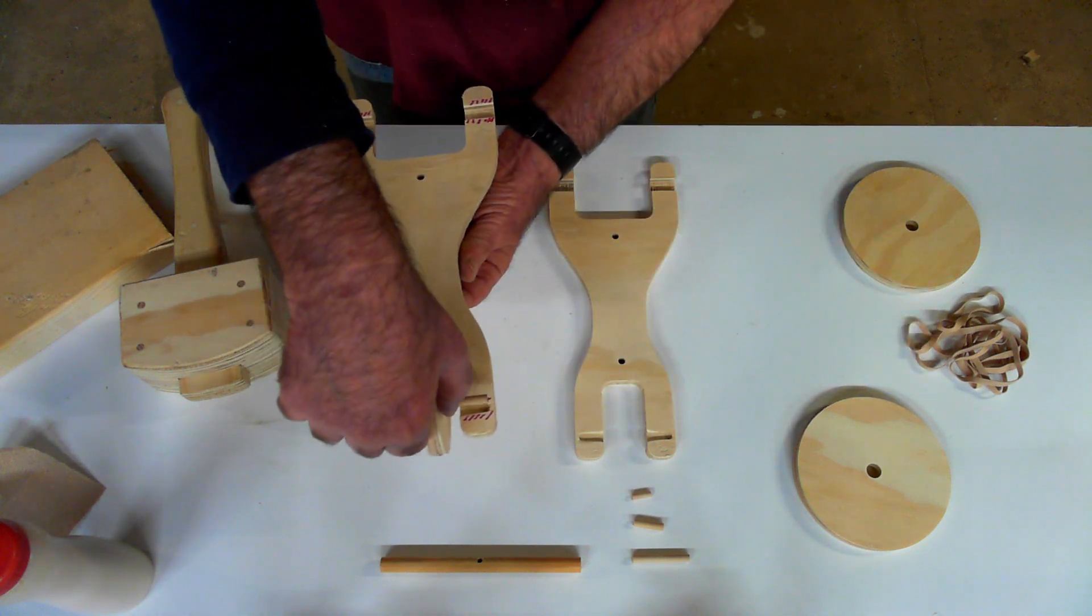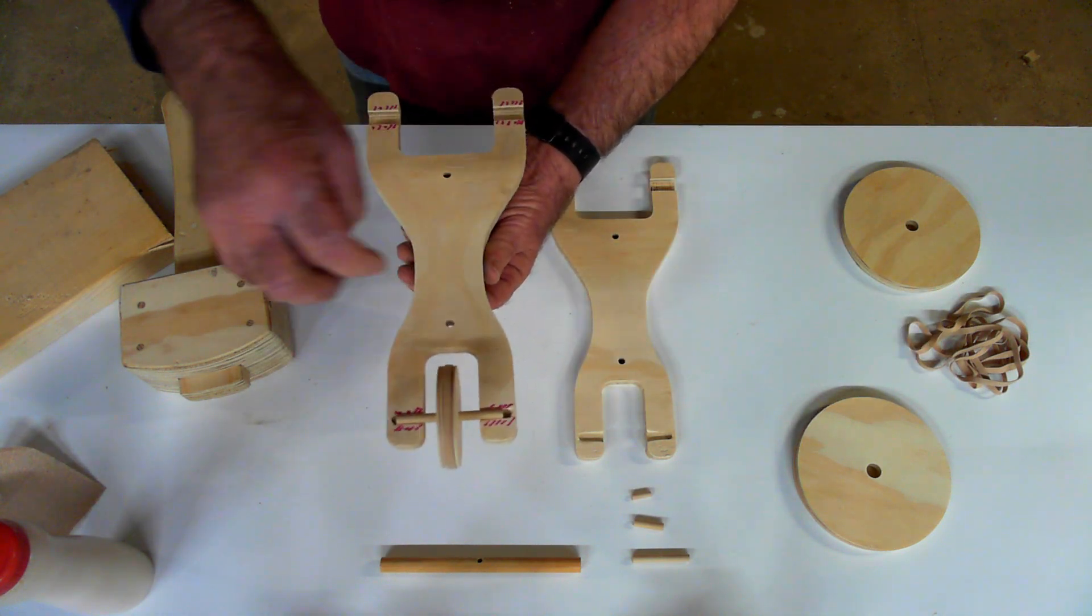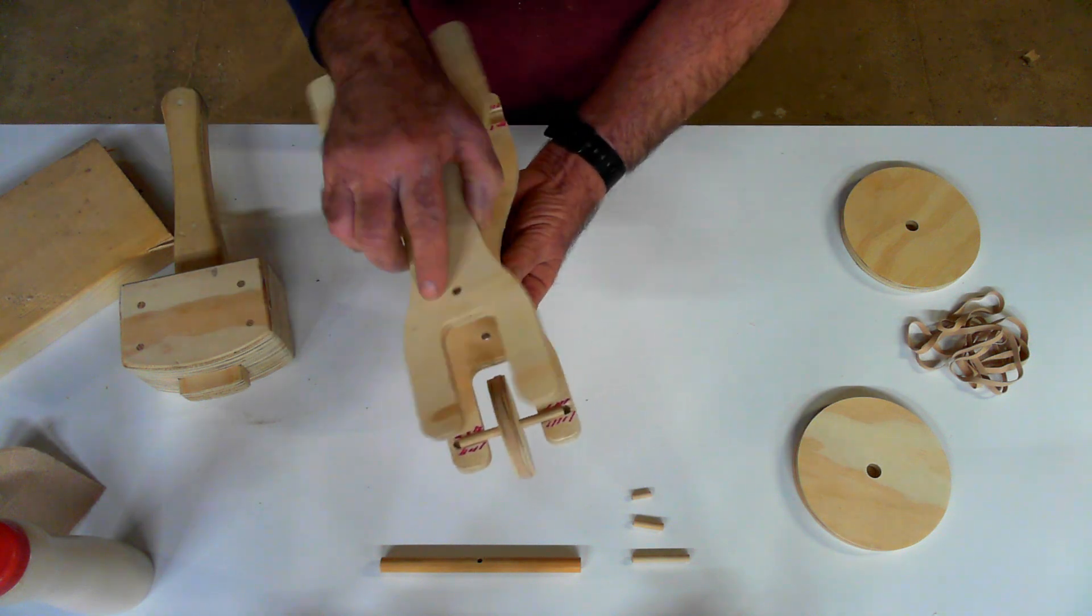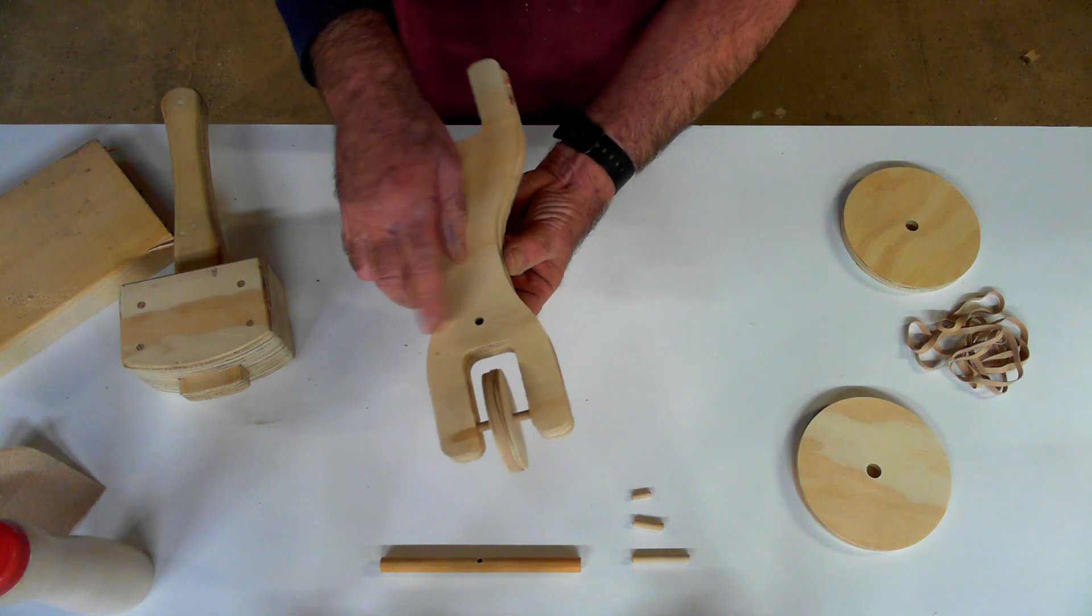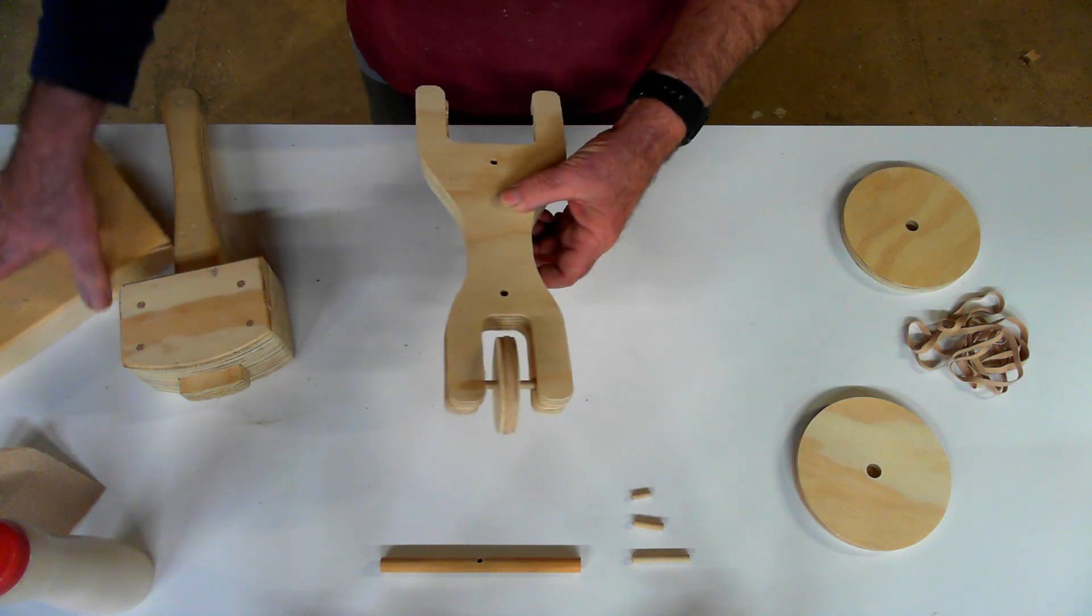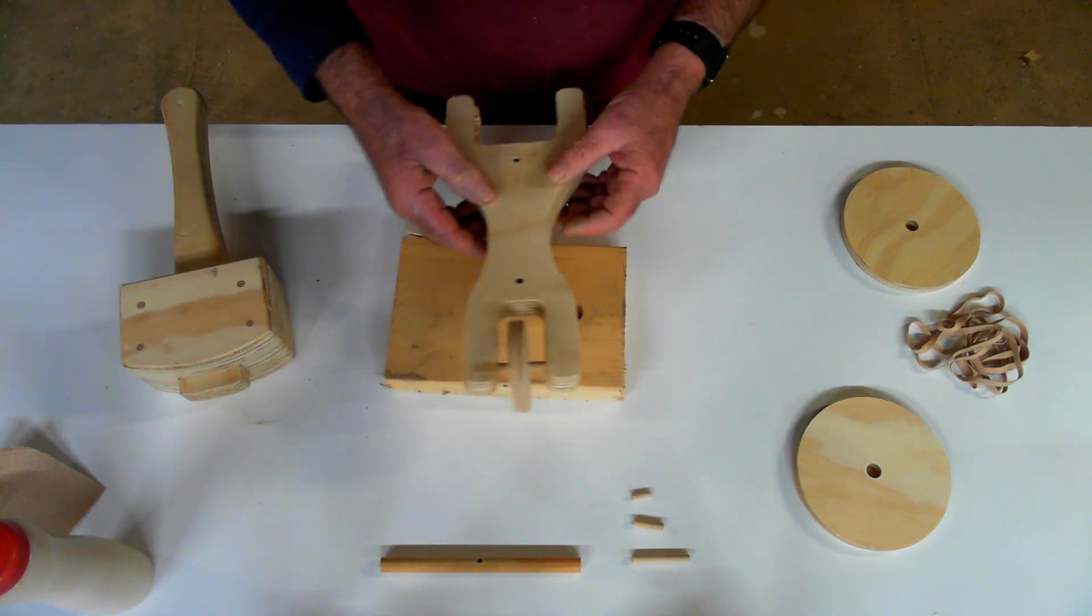So we drop the front wheel in, it spins nice and freely, flip the other piece over right on top of it.